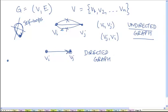But if we allow for multiple edges to exist between the same pair of vertices, we can allow them. But in that case, we won't call it a graph, we will call it a multi-graph. A multi-graph is a graph in which you can have multiple edges between the same pair of vertices.